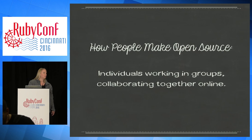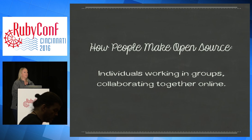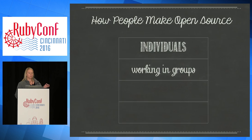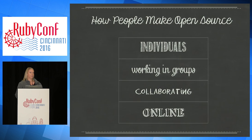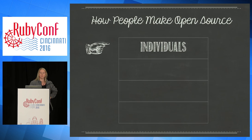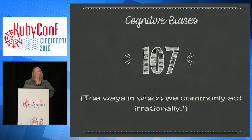If you were going to define how people make open source software, I think this is a pretty good definition: individuals working in groups, collaborating together online. We want to take this definition and break it down into different layers. Starting with the individual layer — Wikipedia tells us there are no less than 107 different ways in which we act completely, utterly irrationally.